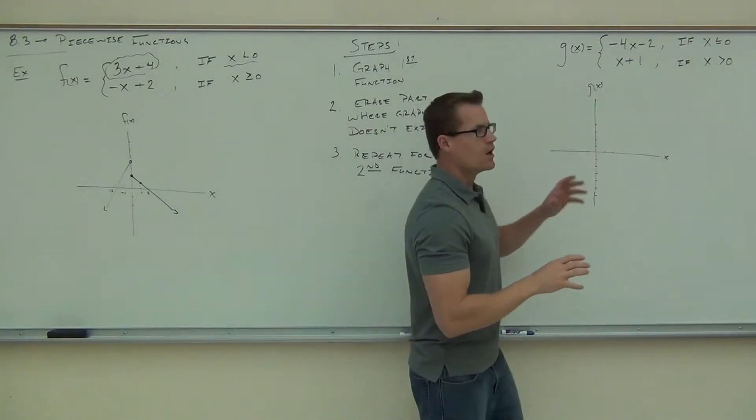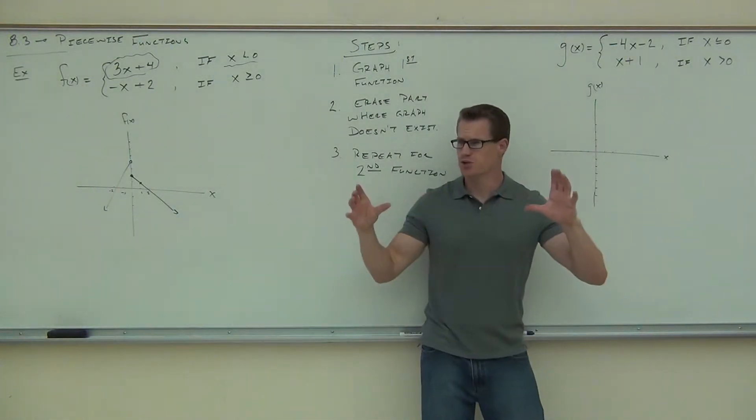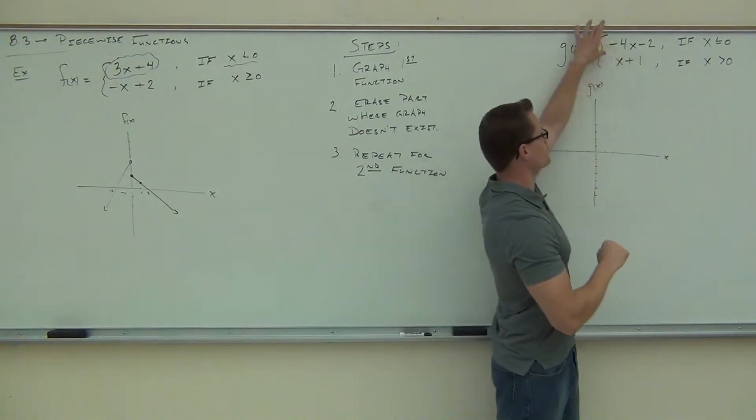We're going to use intercept form and use that to graph our line. When we do this, we're going to ignore the second function completely. We're just looking at the top function right here.